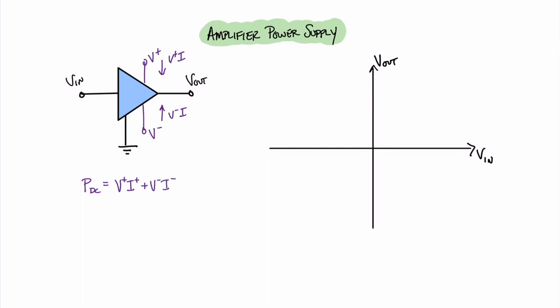Not only do we have power coming in from the power rails, we also have power coming in from the input, denoted P sub I, and power going to the load at the output, denoted P sub L. Since power must be conserved, PDC plus P I equals P load. However the amplifier is not perfectly efficient, so there is some power dissipated inside it. Our full power balance equation is PDC plus PI equals P load plus P dissipated.